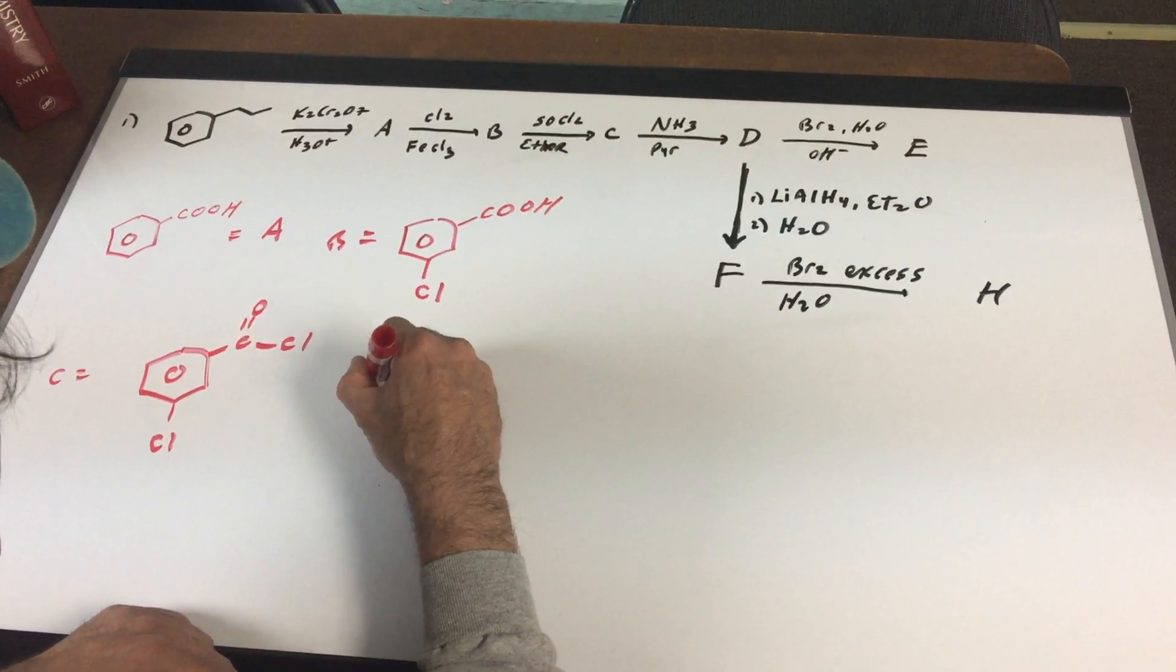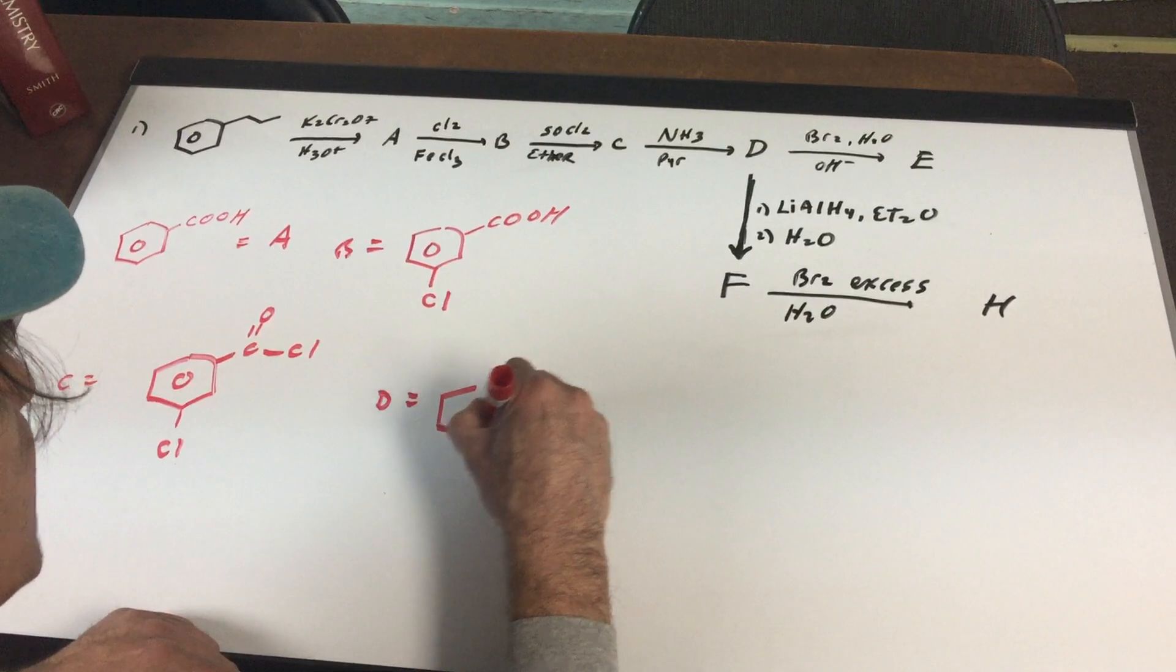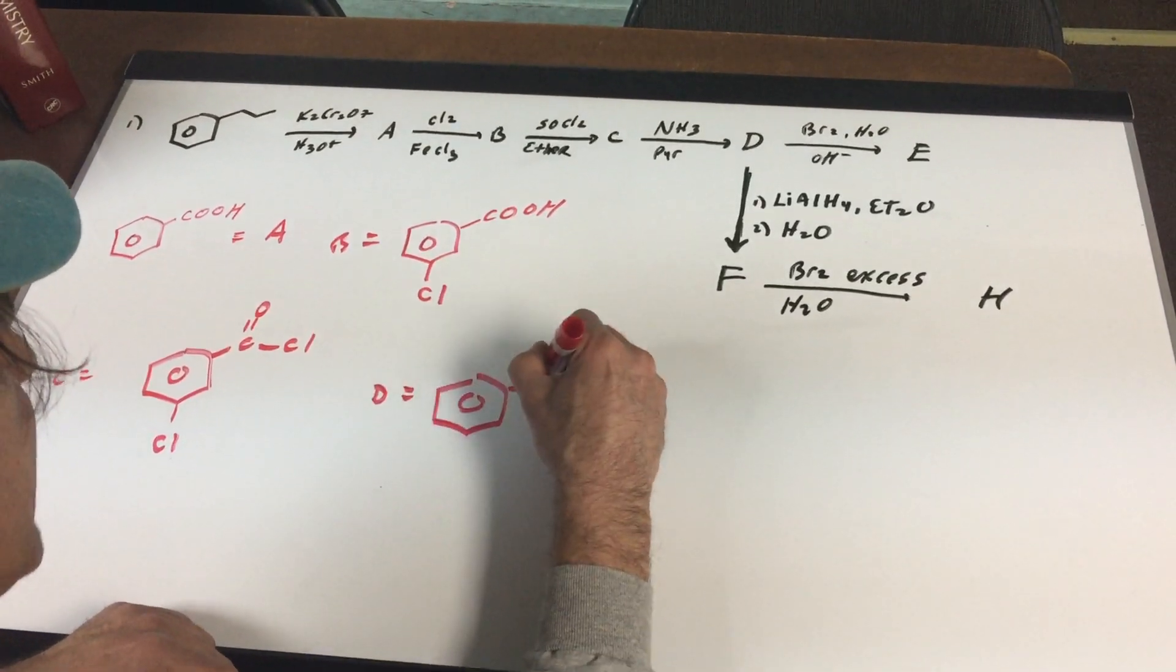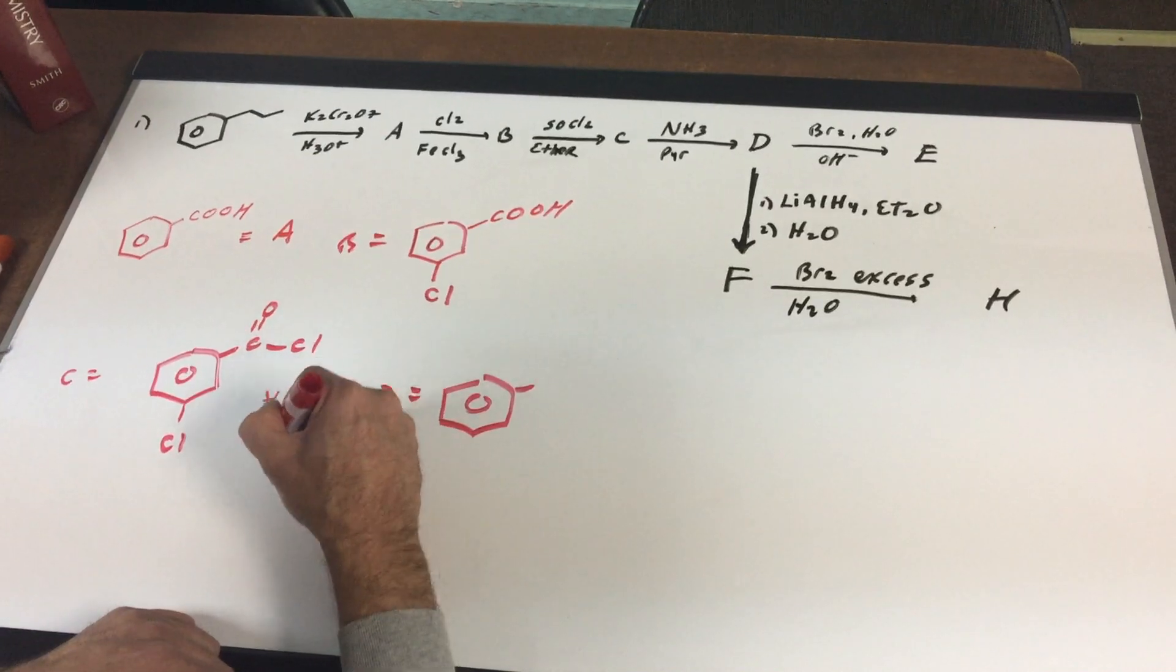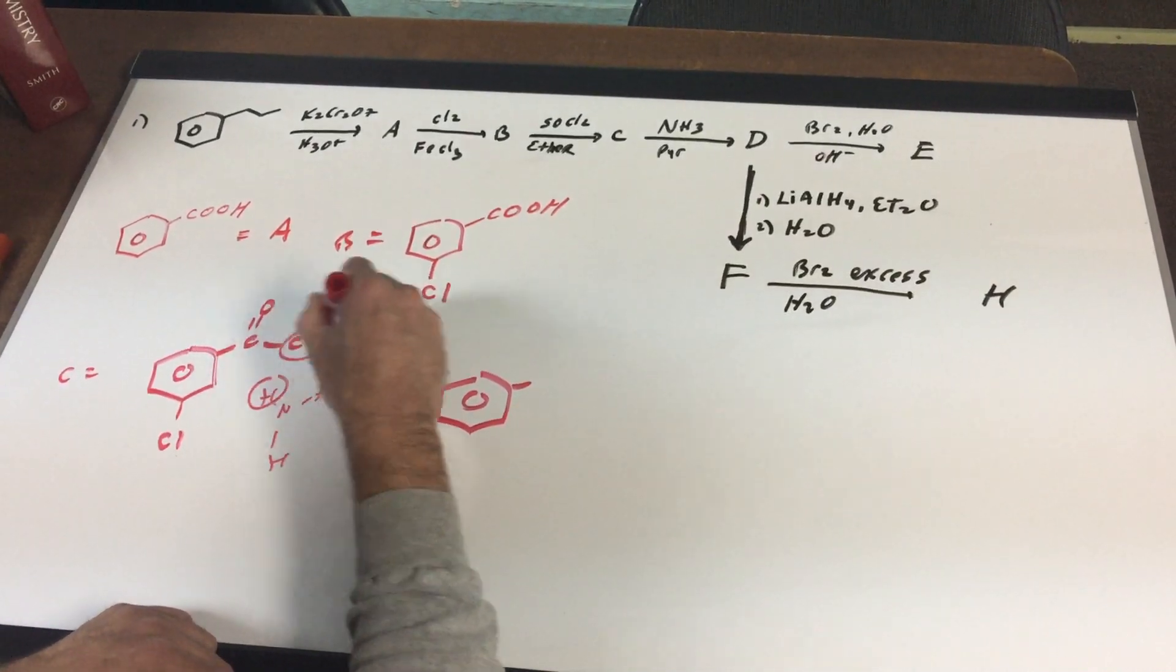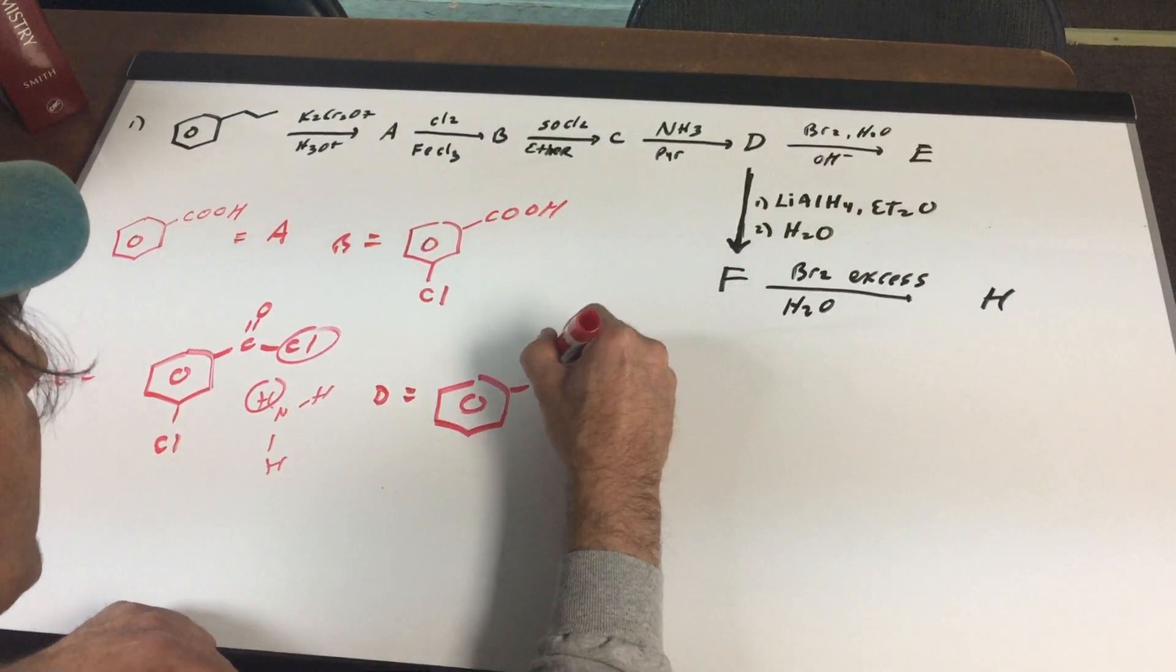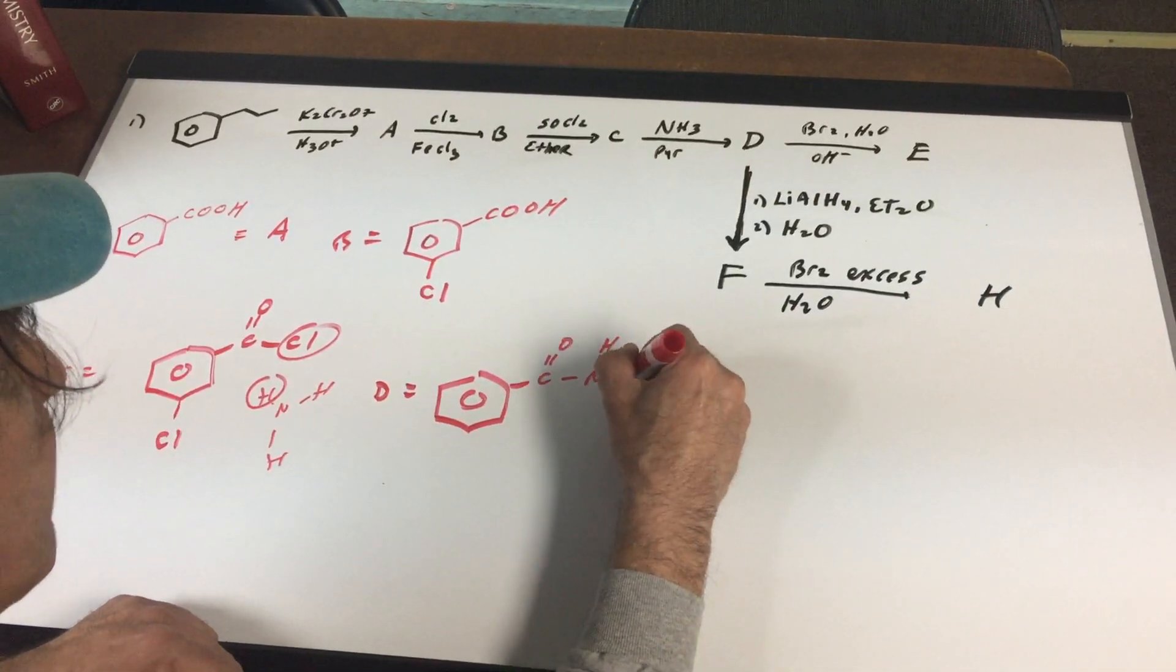The next step is letter D. And all letter D does is splits off HCl. So you would have NH3 coming in. You can almost think of it as splitting off an H and a Cl. And that makes D an amide.